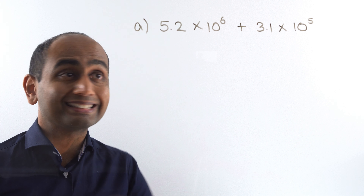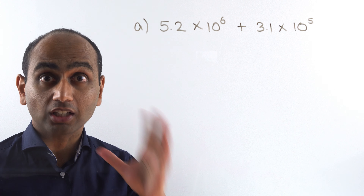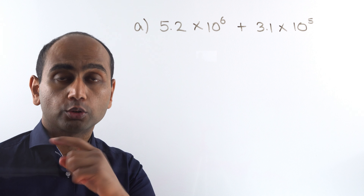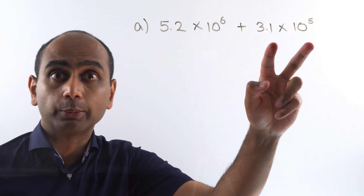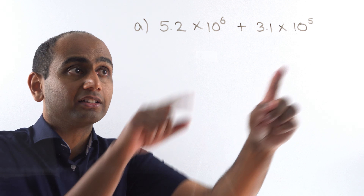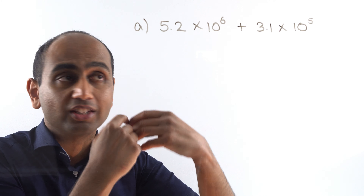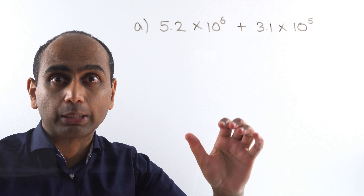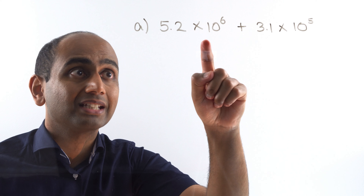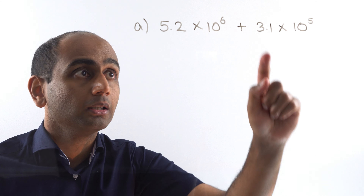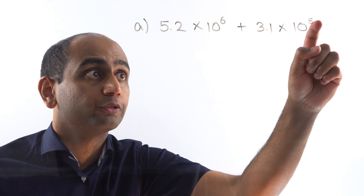In this video we are looking at adding numbers in standard form. We started looking at this in the previous video, but in the previous video the two numbers that we were adding in standard form had the same power of 10. But notice this time we've got different powers of 10 — here I've got 5.2 times 10 to the power of 6, but here I've got 3.1 times 10 to the power of 5.